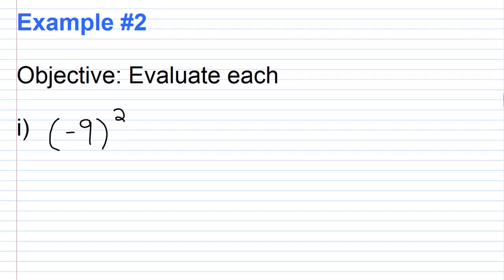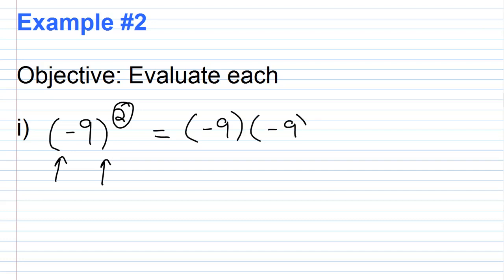For example number two, part one, we have (-9) squared. There are parentheses around the base. Since the exponent is even, the answer is going to be positive. Negative 9 times negative 9 is 81.